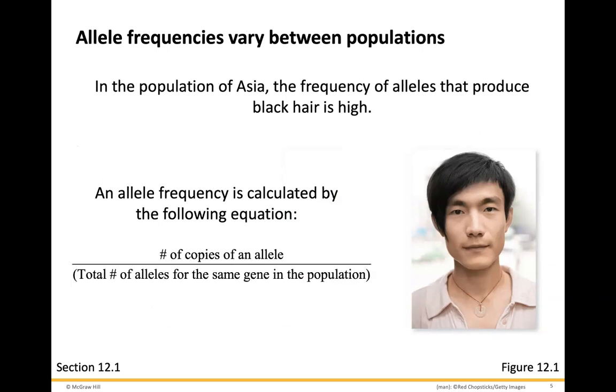Allele frequencies will vary between populations as well. For example, in the population of Asia, the frequency of alleles that produce black hair is high. The allele frequency can be calculated by taking the number of copies of an allele and dividing that by the total number of alleles in the same gene in the population. That'll give you your overall frequency — it's essentially a percentage that you're determining.